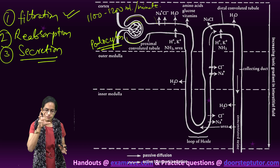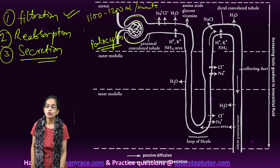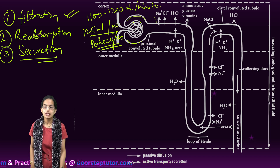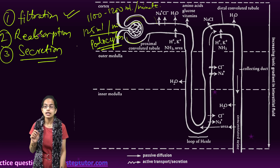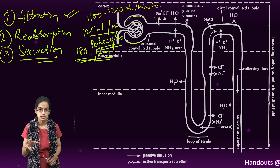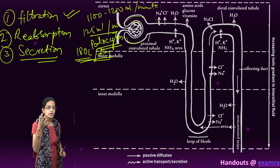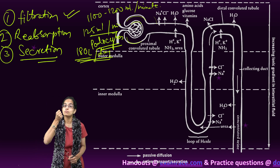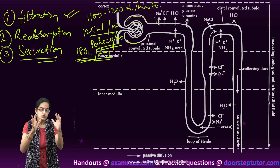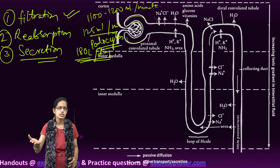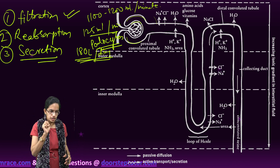The glomerular filtration rate is around 125 milliliters per minute, meaning nearly 180 liters of blood is filtered on a daily basis. This is a very high capacity seen for the glomerulus present in each nephron, and there are millions of such nephrons present within the kidney.